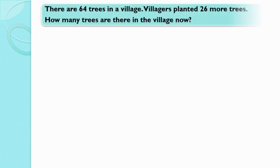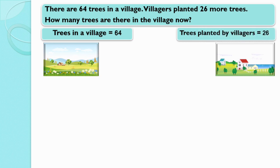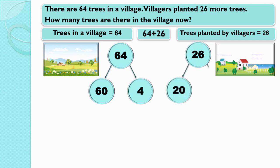We will solve this sum in another way. There are 64 trees in a village. Villagers planted 26 more trees. We will add 64 and 26 to count the total trees. Again, we are going to split these numbers. We will split 64 into two parts: 60 and 4. Now we will split 26 into two parts: 20 and 6.